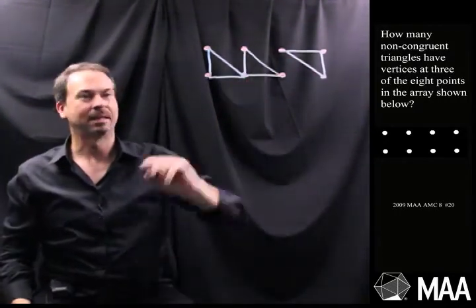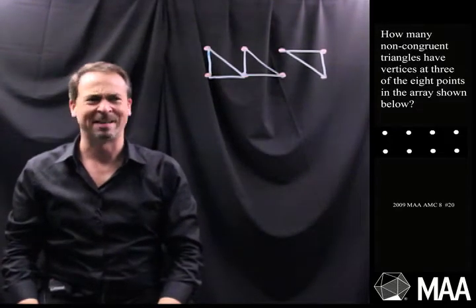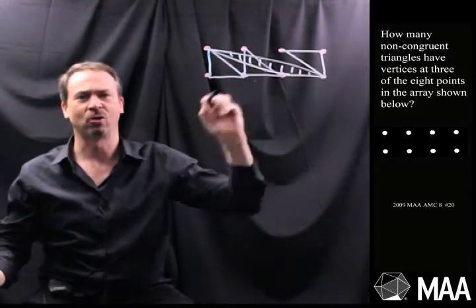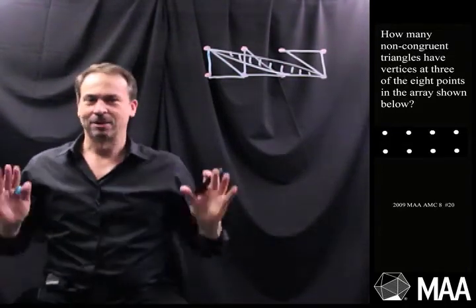Maybe I can do one here. I guess that's congruent again. Can I do anything not congruent? Yeah, maybe I'll do one that's sort of lopsided like this. There's definitely a new triangle. Alright, so I've got a feel for this problem.